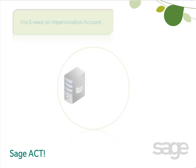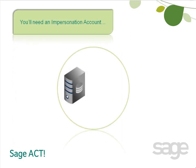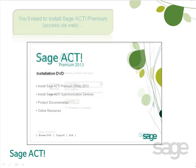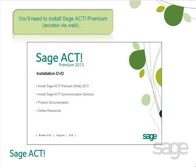After IIS is installed, you'll need a special user account created on your web server machine called an impersonation account. An impersonation account, coupled with the Sajak database username and password, enables remote web users to access the Sajak Premium Access via Web application. With IIS installed and an impersonation account configured, you can then install Sajak Premium Access via Web.